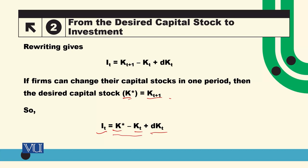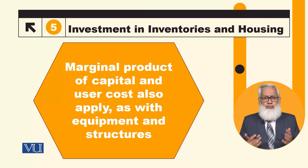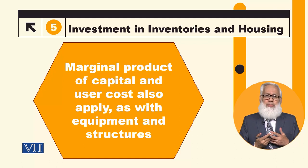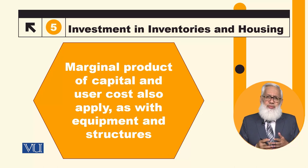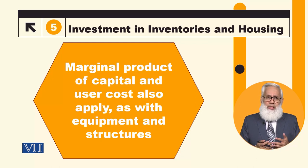So gross investment has two parts: net investment plus depreciation. This concept applies when multiple periods are involved in reaching the desired capital stock, and also when talking about fixed capital investment — for example, when firms want to start a new plant or business. Inventories are also a form of investment; they are the total stock of unsold goods, including raw materials and unfinished products.